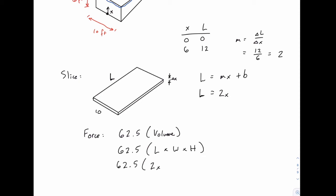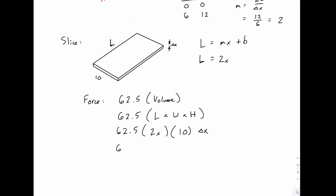So 62.5 times length times width times height. The length we know is 2x. The width is a constant 10. And the height, that's delta x, our thickness. So the force is pretty much done.